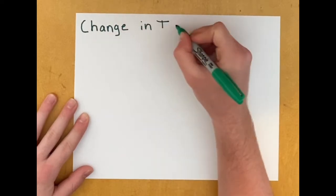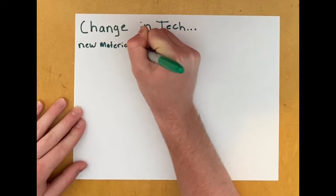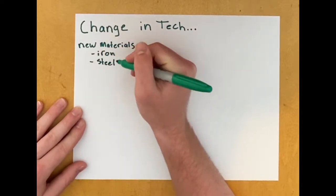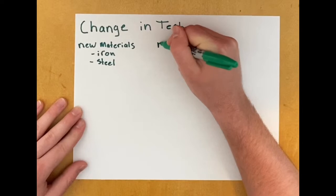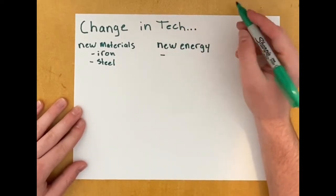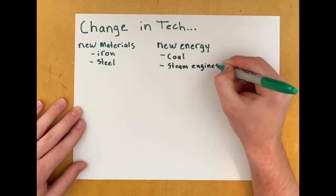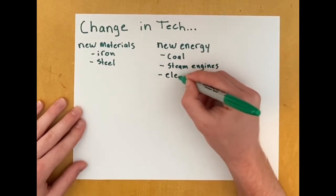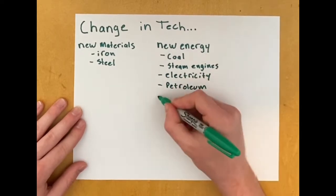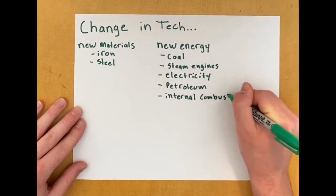There were many pieces of technology that changed the way we made things. Some of these included new materials such as iron and steel. It also included the use of new energy sources, including coal, the steam engine, electricity, petroleum, and the internal combustion engine. By using coal, we were able to burn it and turn its heat into mechanical energy.